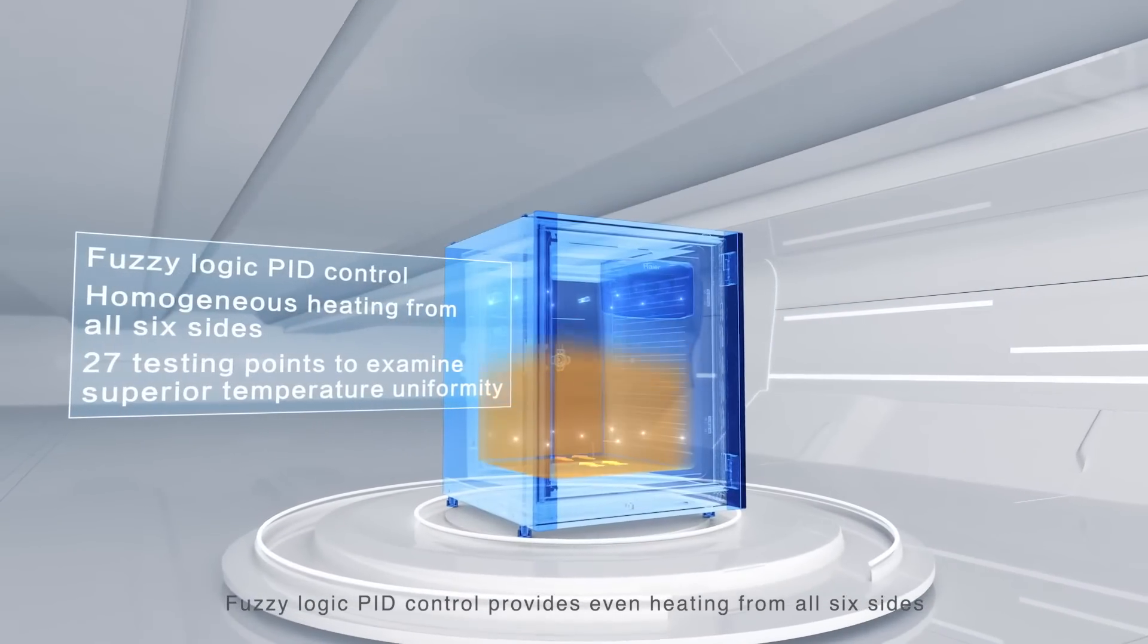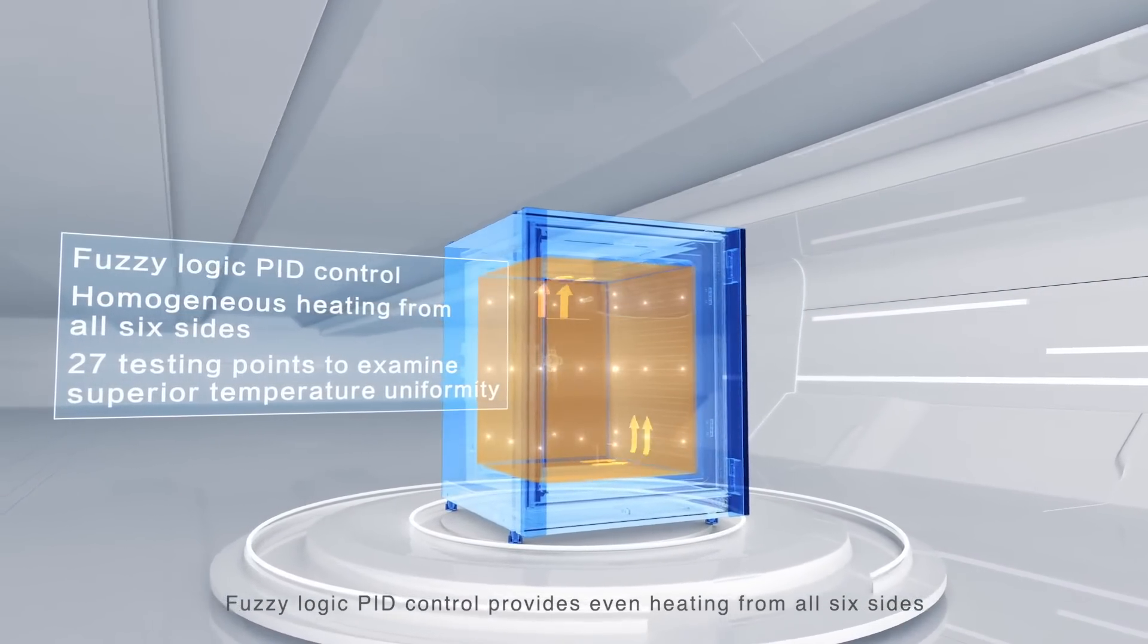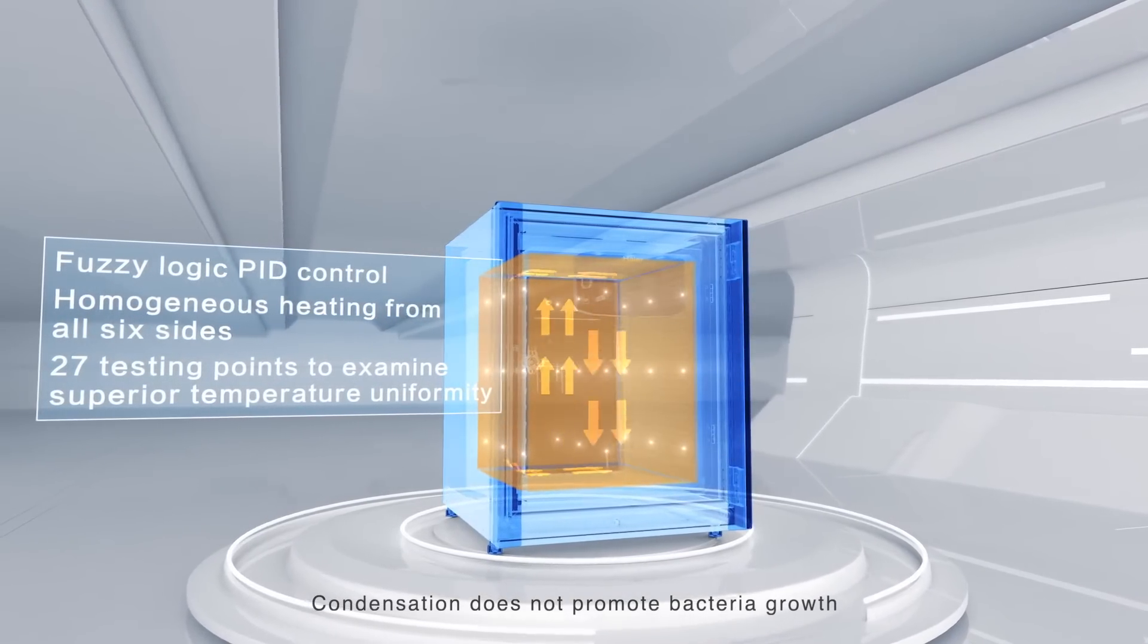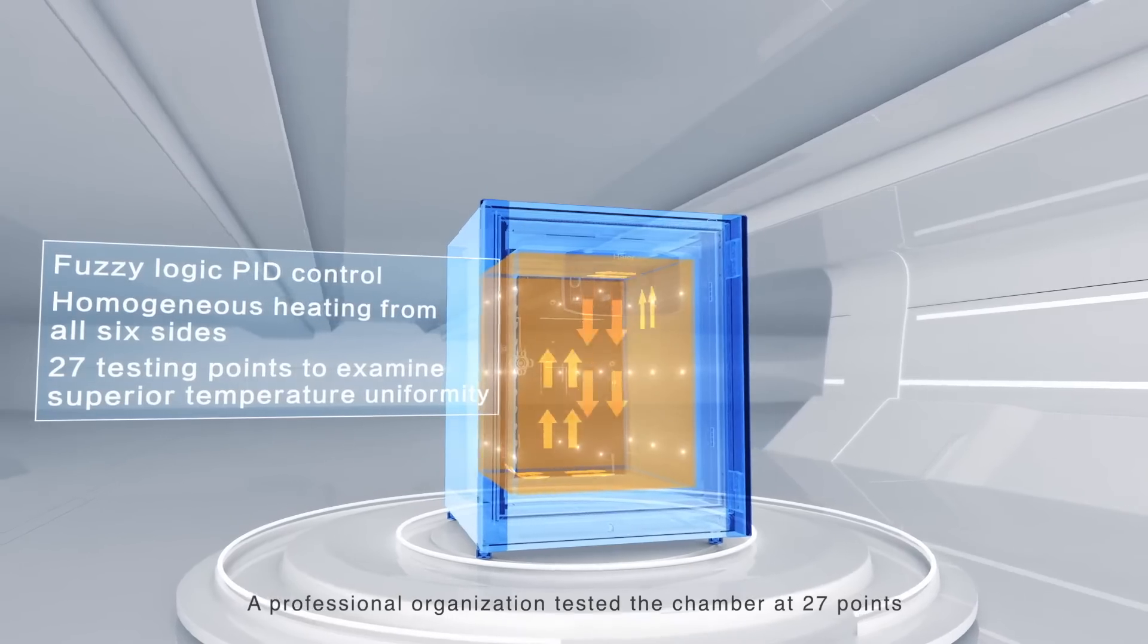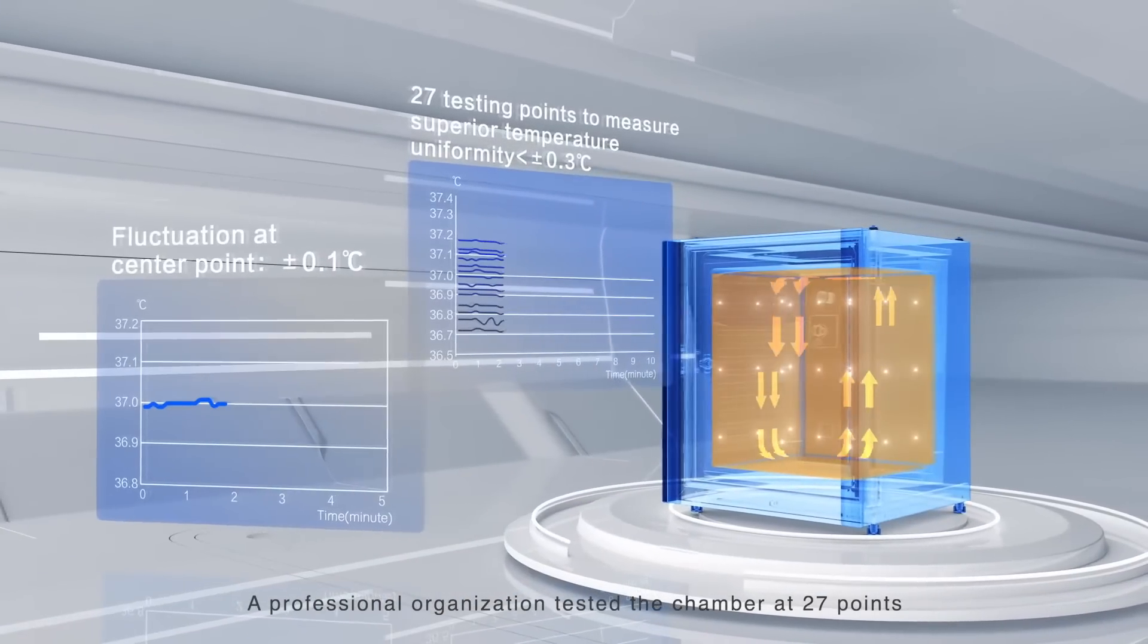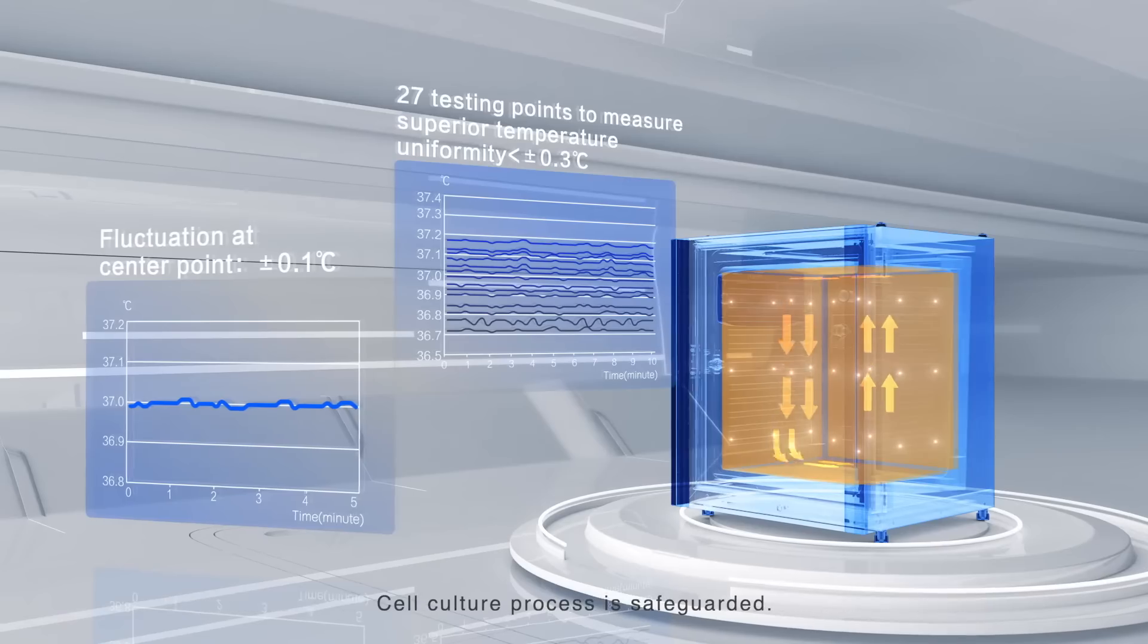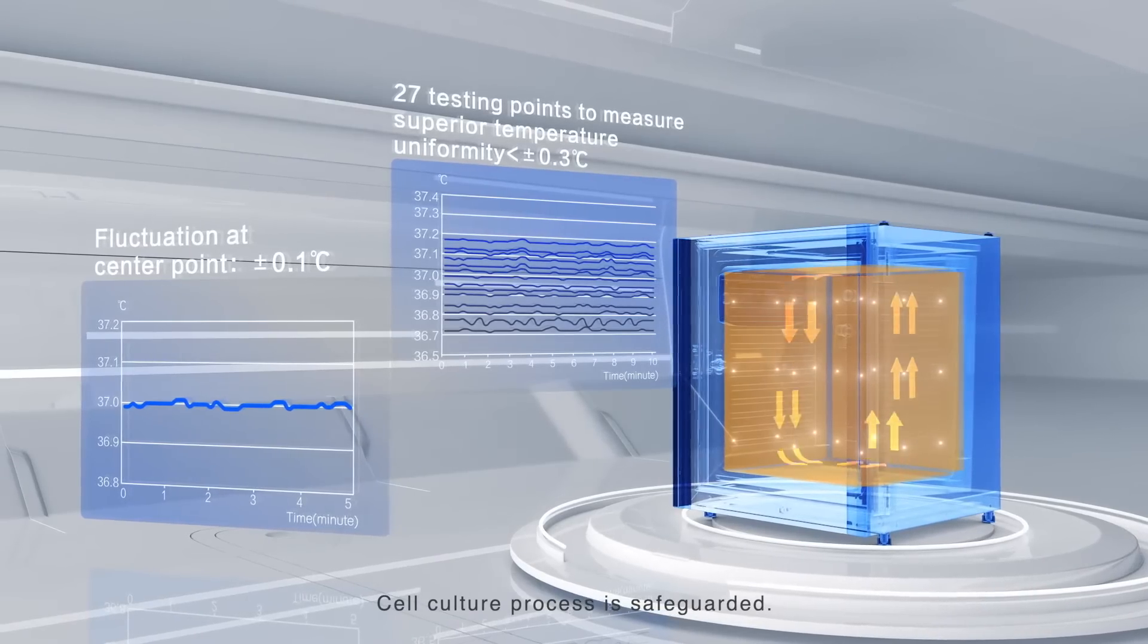Fuzzy Logic PID control provides even heating from all six sides. Condensation does not promote bacteria growth. A professional organization tested the chamber at 27 points to confirm superior temperature uniformity with precise temperature control. Cell culture process is safeguarded.